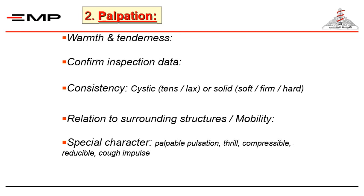Some swellings have a special character: a hernia gives an expansile impulse on coughing; an arterial aneurysm gives expansile pulsations synchronous with the heartbeats; and swellings with an underlying arteriovenous fistula transmit a palpable machinery thrill. Lastly, no examination in surgery is complete without examination of the draining lymph nodes — an abscess of the foot can cause inflammatory lymphadenitis in the groin lymph nodes, and a malignant breast tumor can spread to cause axillary lymph node metastasis.